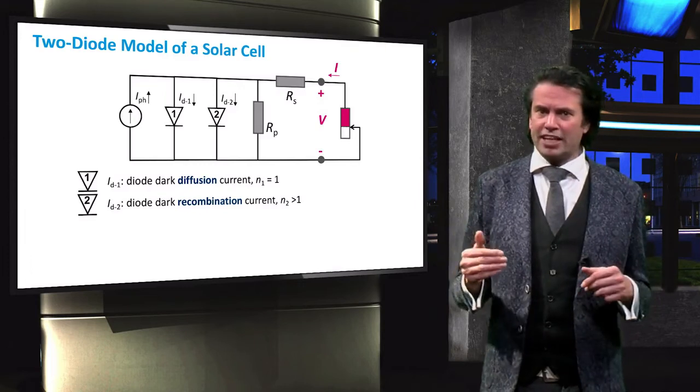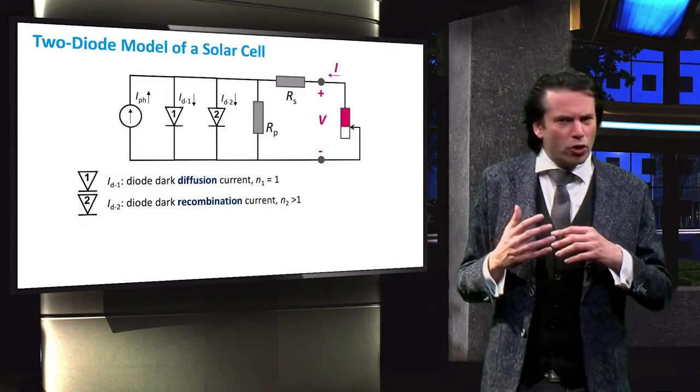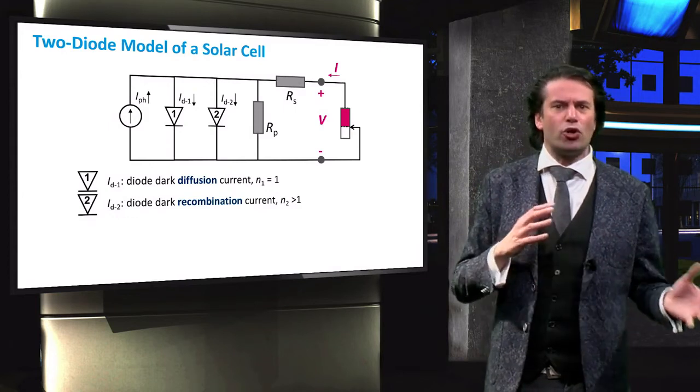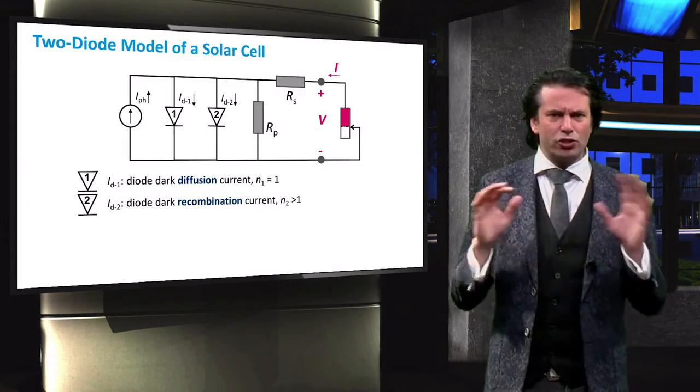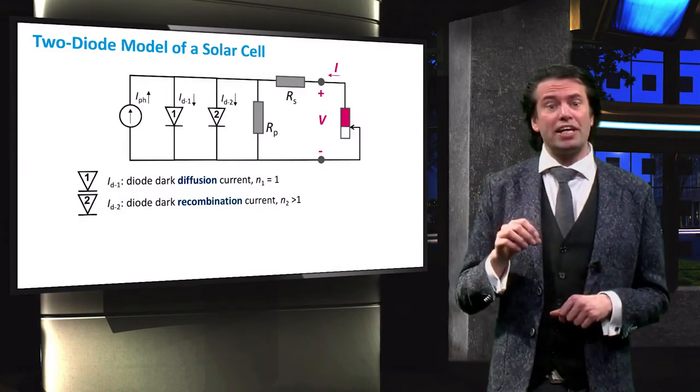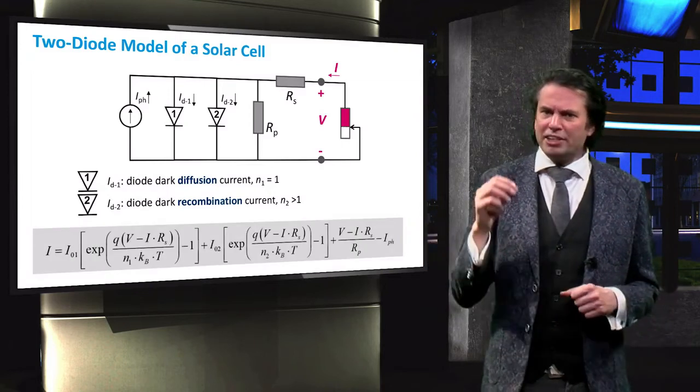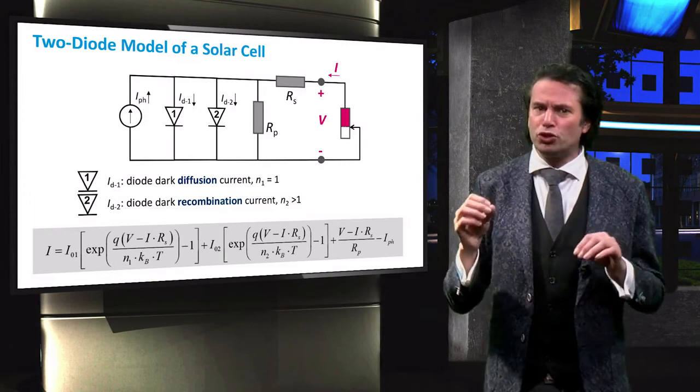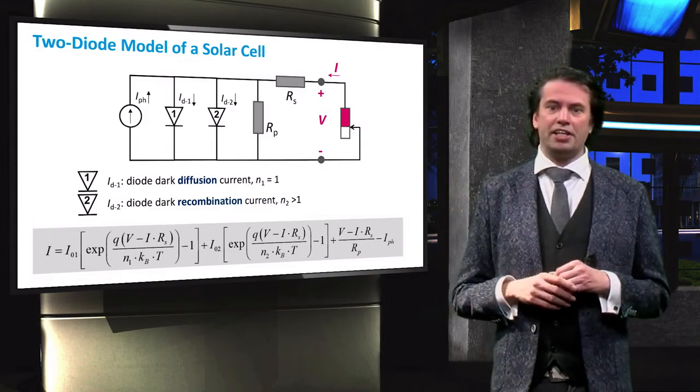Many times this second diode will have an ideality factor of 2, but we will learn in a future video that this is only true for very specific cases, and is not always appropriate. When we have this new model, we get a more complex equation. The only main changes are that we have two separate dark saturation currents and two separate ideality factors.